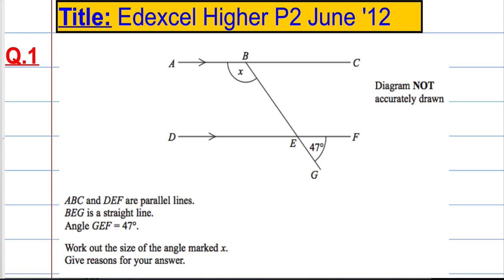Question 1 of the Edexcel Higher paper 2 from June 2012. We've got ABC and DEF are parallel lines, BEG is a straight line and the angle GEF is 47 degrees. We're asked to work out the size of the angle marked X and give reasons for your answer.